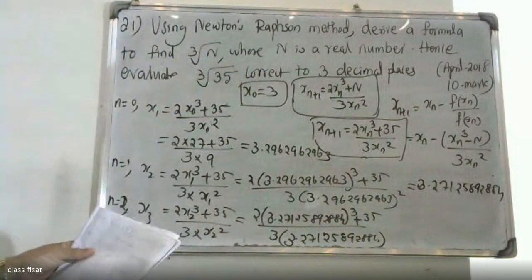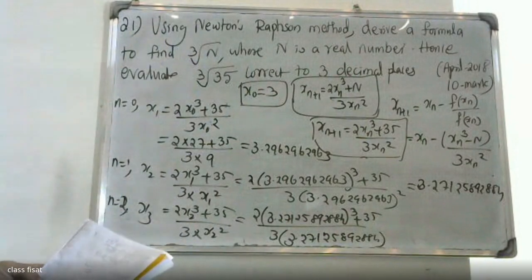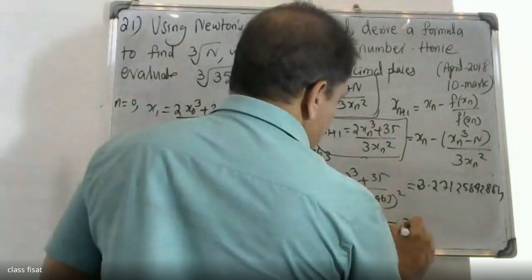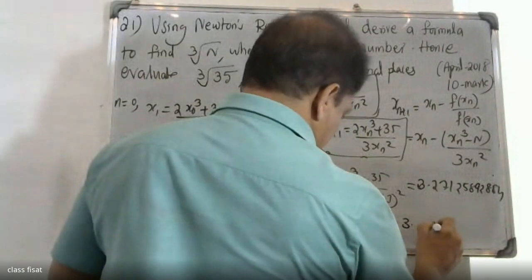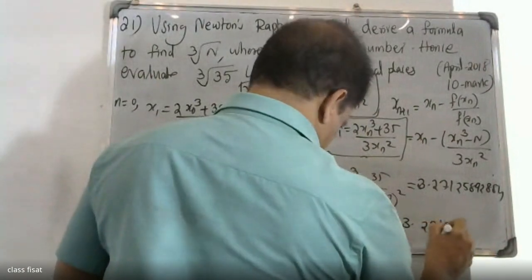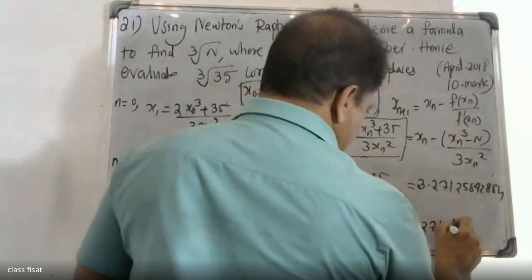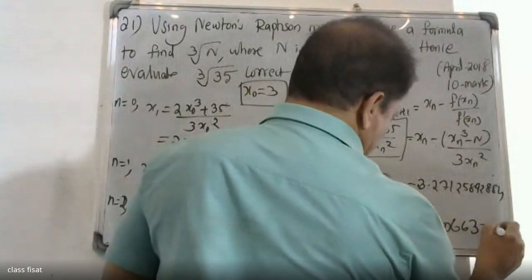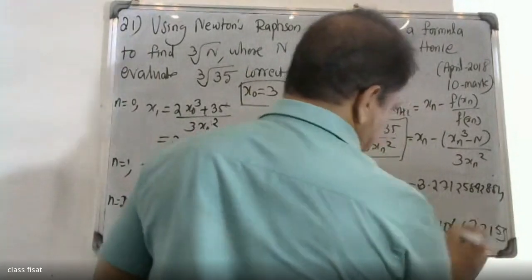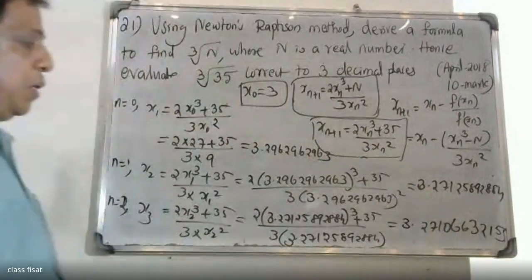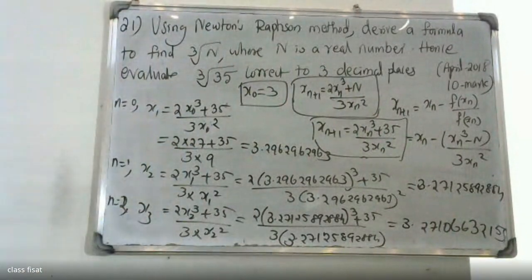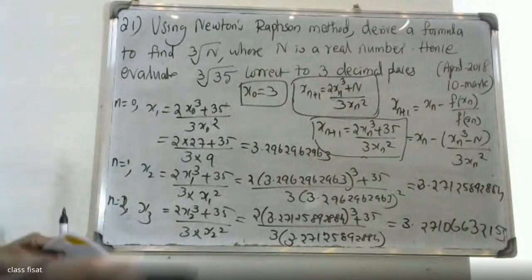Now substituting x2 into the formula, (2x2³ + 35) / (3x2²), with x2 equal to 3.2727125892884, we get x3 equal to 3.27106632153.